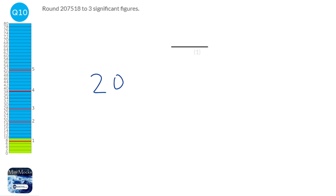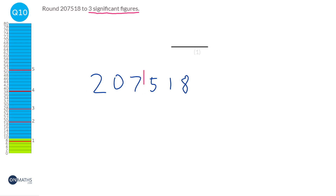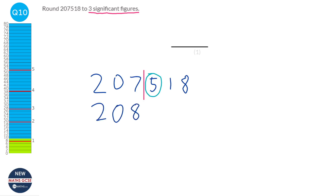We're asked to round this to three significant figures. Starting from the left-hand side, we want 3 numbers: 1, 2, 3. We draw our line after that third number, starting counting from the first non-zero digit. All the numbers to the right will turn to zero. Before that happens we look at the next digit — if it's 5 or more it moves the previous digit up by one. It is 5, so it's not going to be 207, it's going to be 208. A common mistake is writing 208 — no, all numbers to the right turn to zero. So it would be 208,000 exactly.